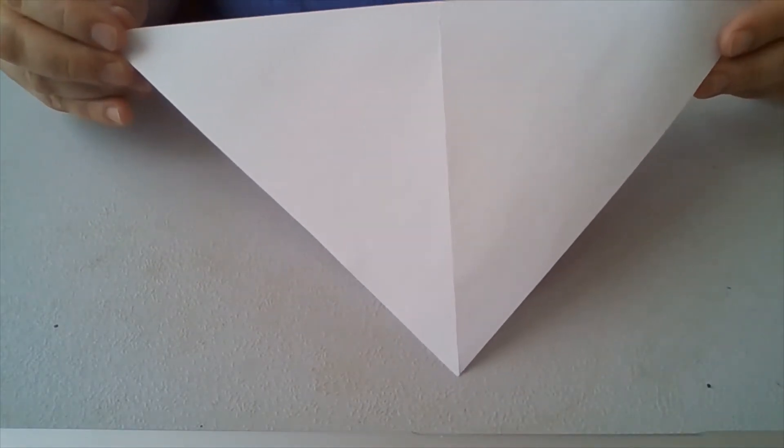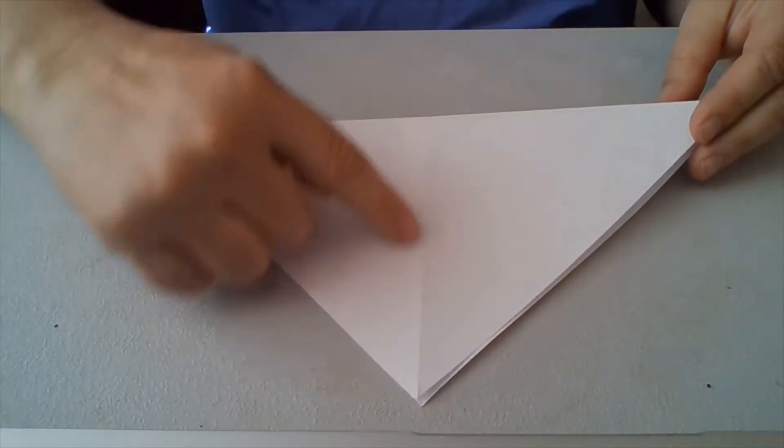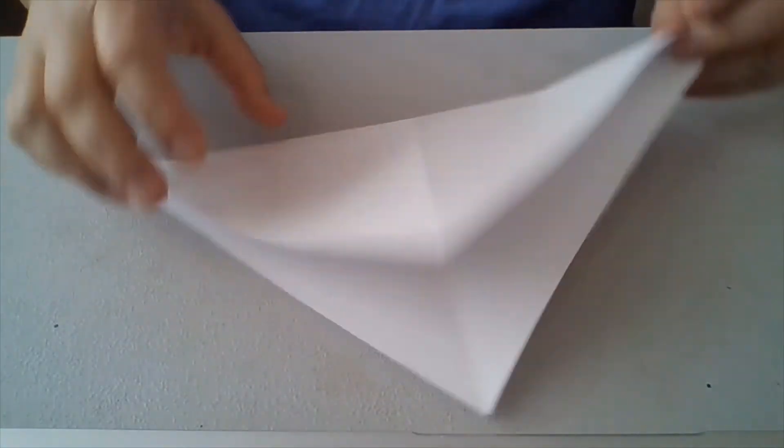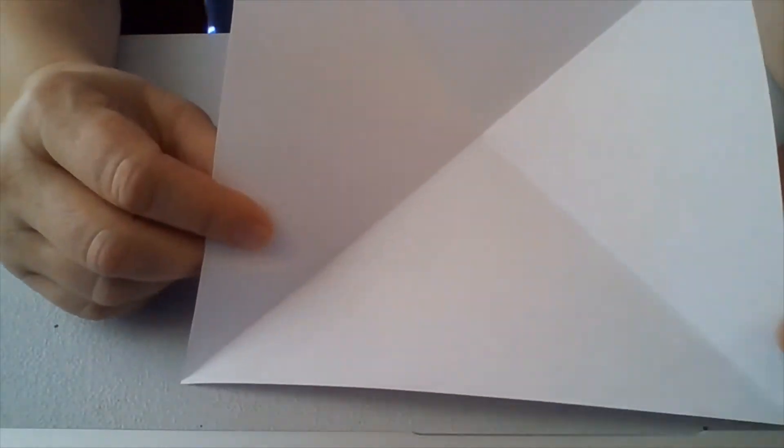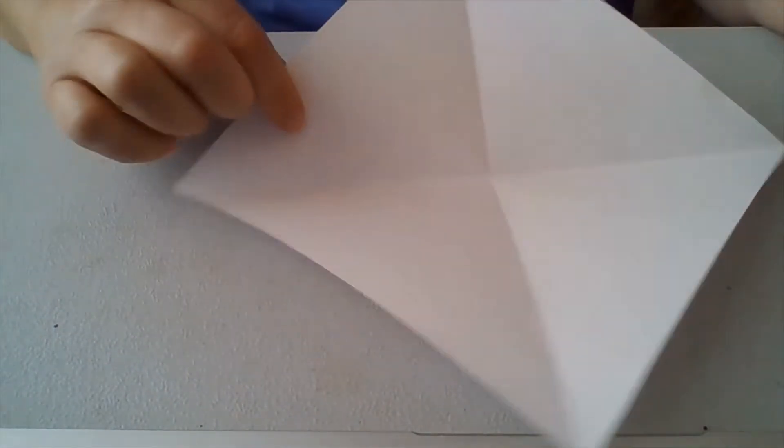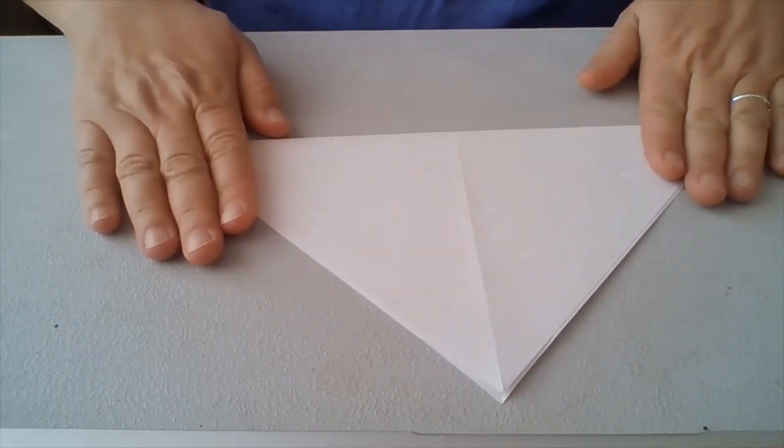And so now it's that triangle again, but you can see that we've got a crease right here. So when I open it up, I can see I have an X in the middle. I've got lines going both directions. Alright. So I'm going to fold it back down in the triangle.